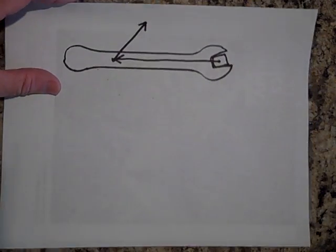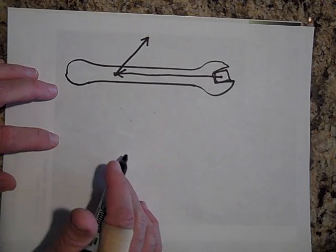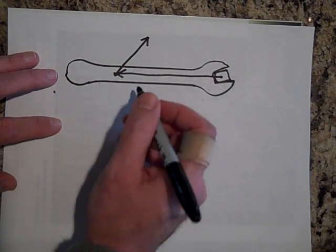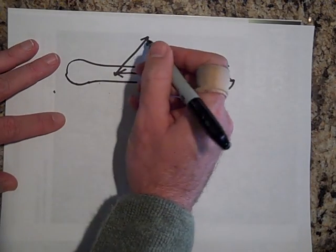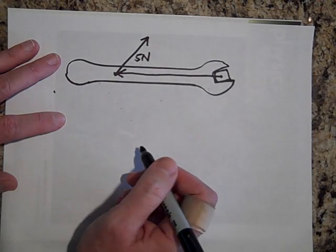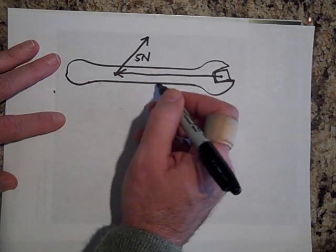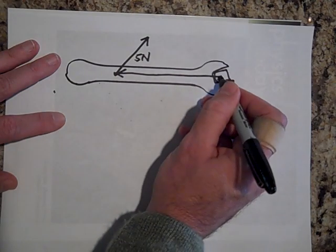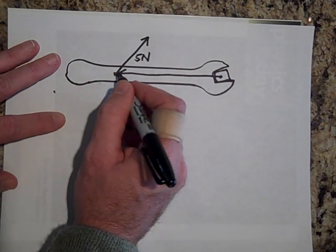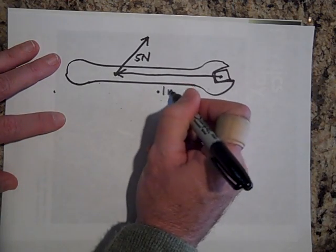So let's put some numbers in here and talk about units for a second. Let's say that you're pushing on this with five newtons of force. So that's five newtons and let's say this is 10 centimeters. So from the axis of rotation to here is 10 centimeters. So that's 0.1 meters.